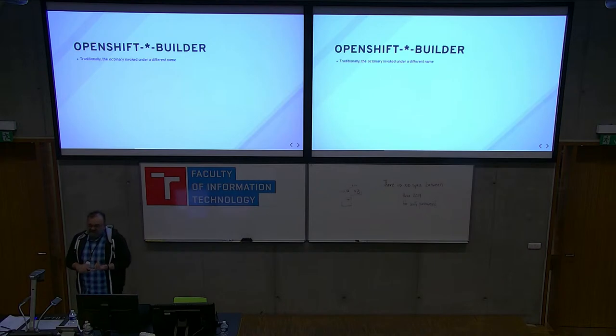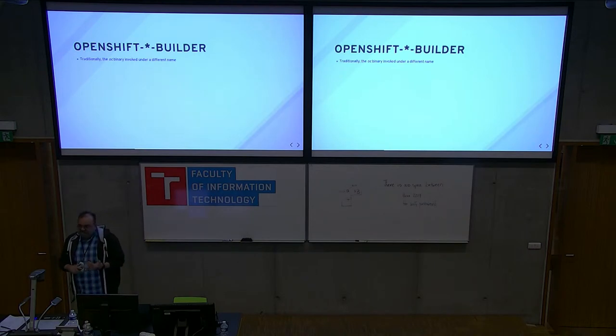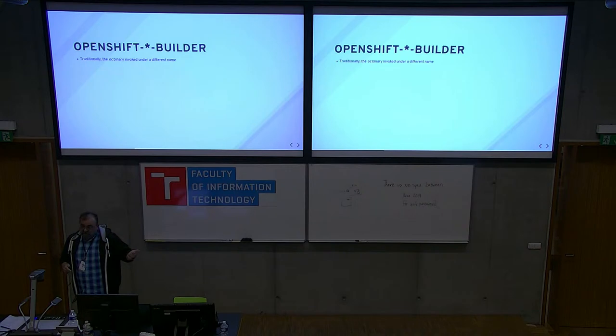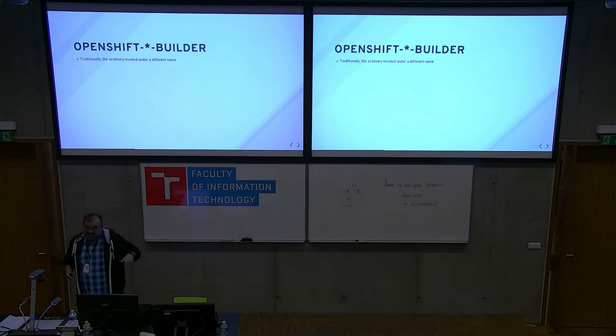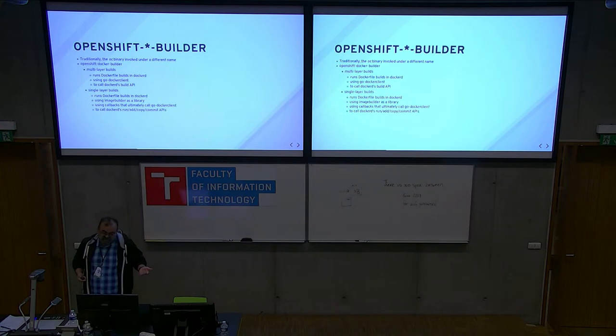Traditionally, the OC binary did everything for OpenShift. There was a build — when you were running things, it was running them out of separate images, but it was all essentially the exact same binary. It was just being invoked under a different name. One of those names is OpenShift Docker Builder, and it does a lot of things.